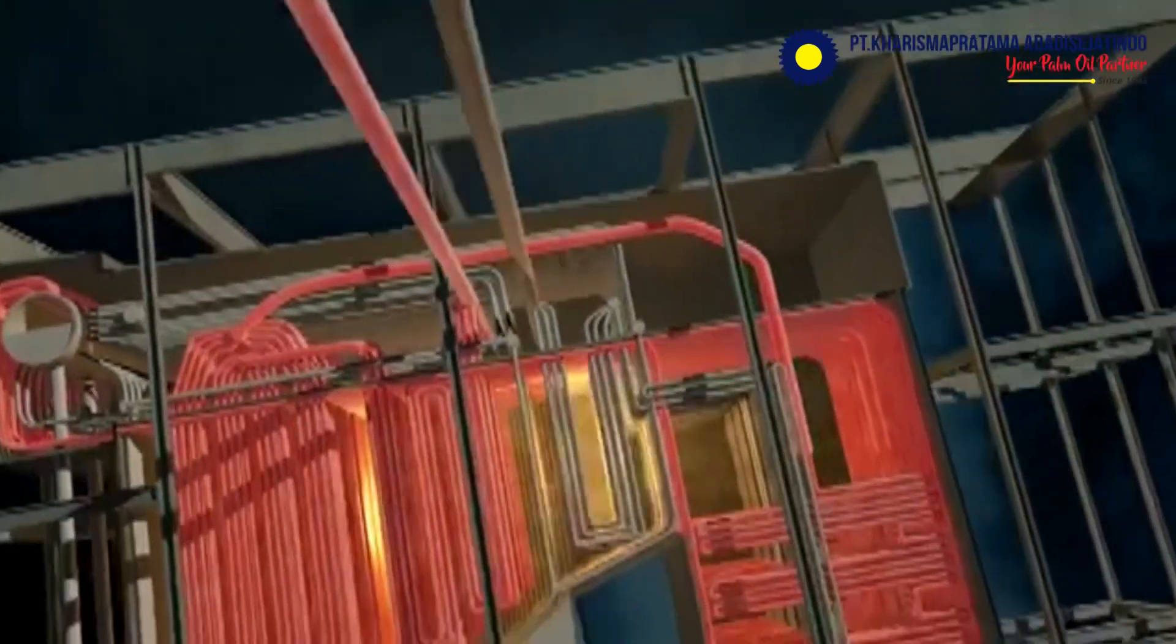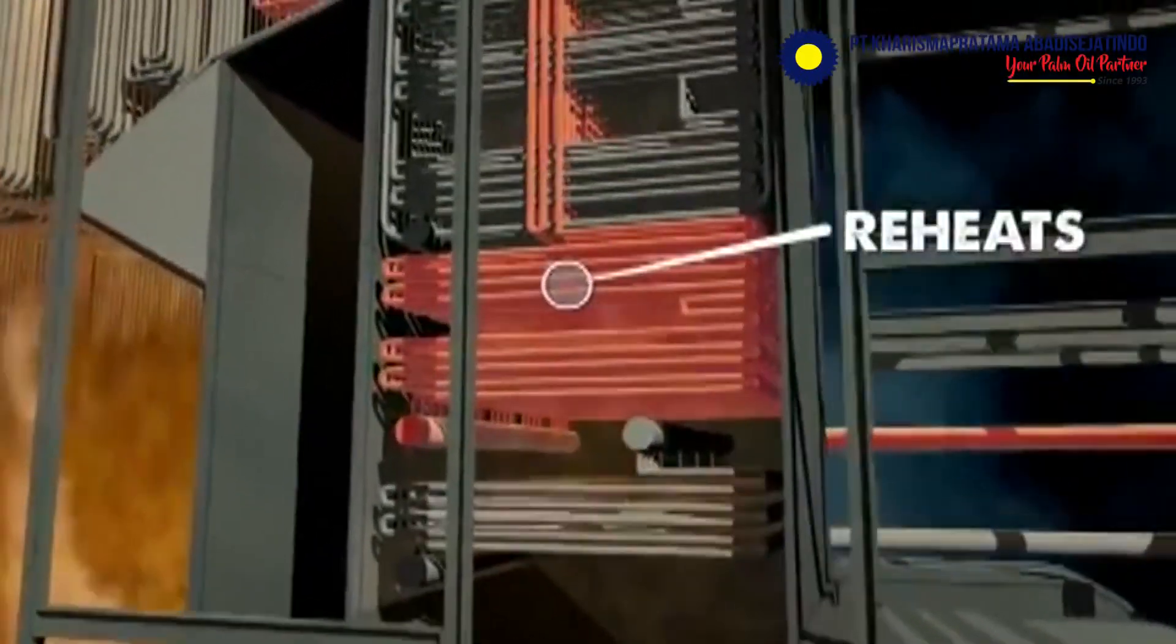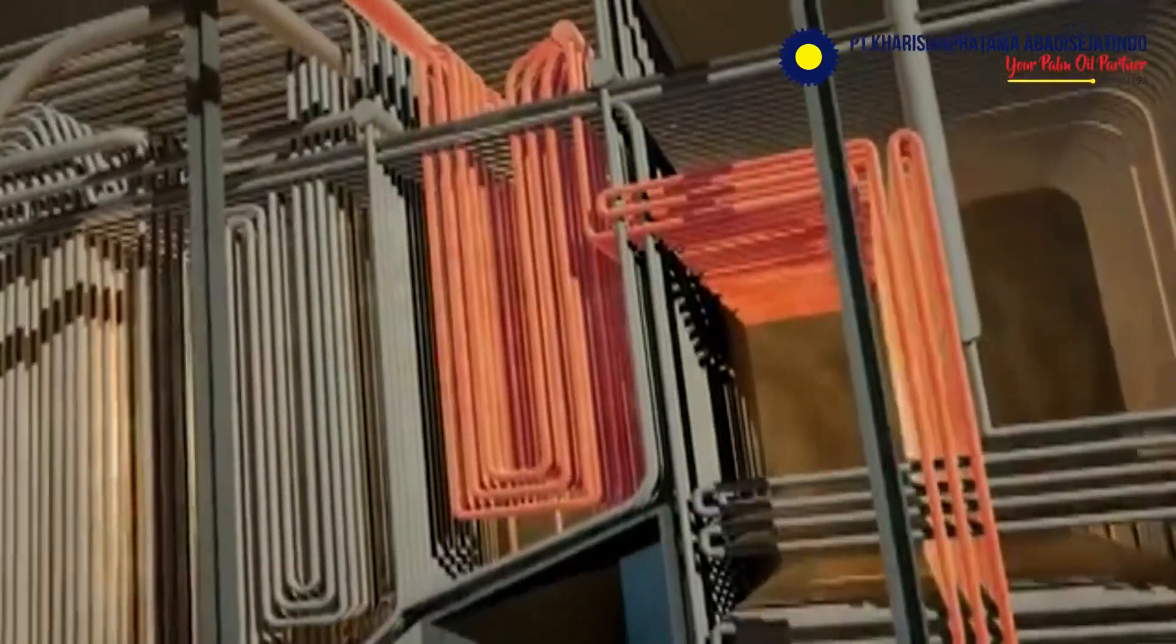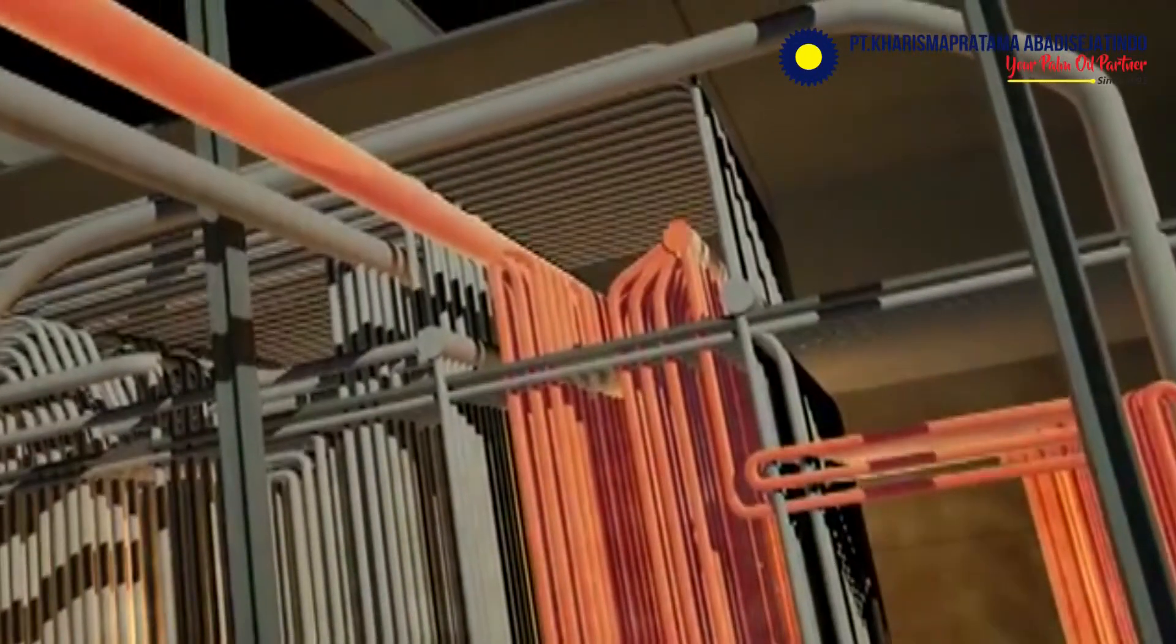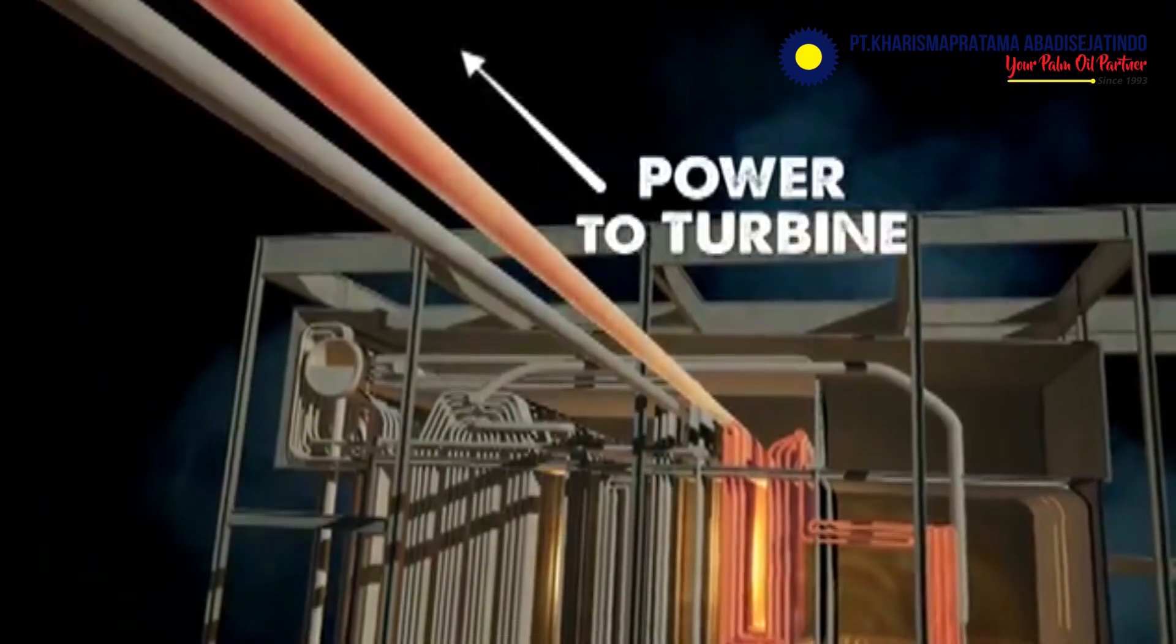Finally, exhaust steam, now at a lower temperature and pressure, is sent back to the boiler through a dedicated reheat stage. This reusable steam is brought back up to operating temperature before returning to the turbine, providing additional power through a secondary stage.